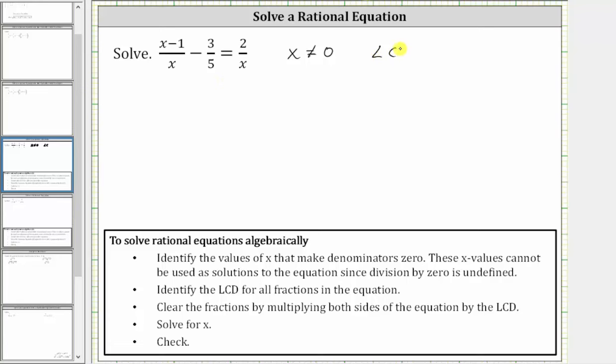So because the LCD is 5x, the next step is to multiply both sides of the equation, each fraction in the equation by 5x. So multiplying both sides by 5x will give us 5x times the quantity x minus one divided by x minus 5x times 3 fifths equals, on the right side, 5x times two over x.